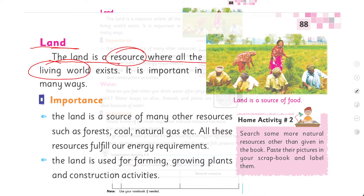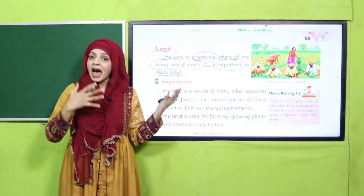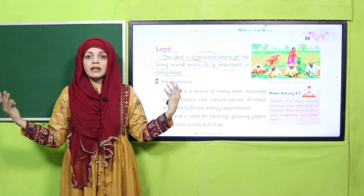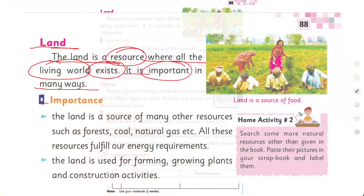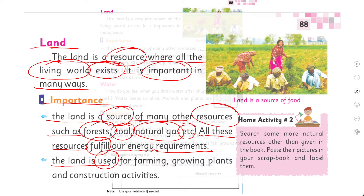'The land is a resource where all the living world exists. It is important in many ways.' My dear students, land is a place where everybody is living — animals, plants, human beings, everybody. So land is extremely important. Now let's have a look at its importance. 'The land is a source of many other resources such as forests, coal, natural gas, etc. All these resources fulfill our energy requirements. The land is used for farming, growing plants, and construction activities.'